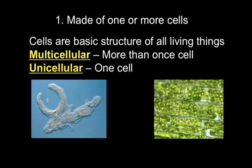First, every organism from bacteria to elephants must be made of cells. Cells are the basic structure of all living things, very similar to how the basic structure of matter is the atom. Some organisms like bacteria are only made of one cell — these are called unicellular organisms. All the functions of that one cell allow it to survive. Other organisms are multicellular, containing more than one cell. The cells, which look like bricks, are interconnected with each other. We will explore more about these cells later on.